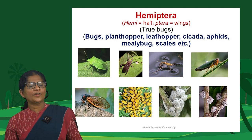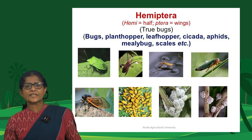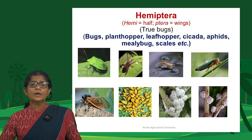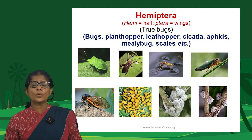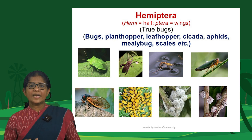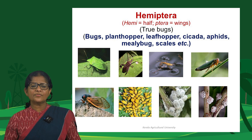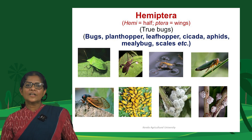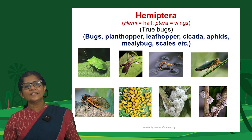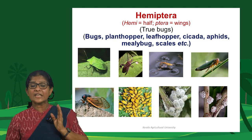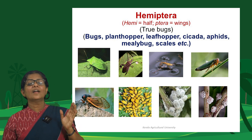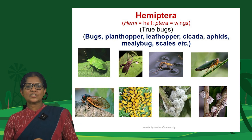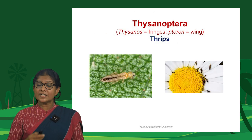Hemiptera is a very large and diverse order including stink bugs, plant hoppers, leafhoppers, cicadas, aphids, mealybugs, scales, psyllids, whiteflies, and many more — these are the true bugs. The name Hemiptera is derived from the characteristic wing of the suborder Heteroptera, where the basal half of the forewing is hardened and the distal half is membranous, called a hemelytron.